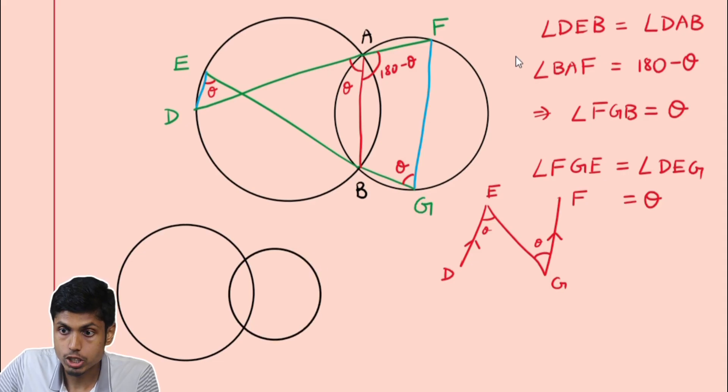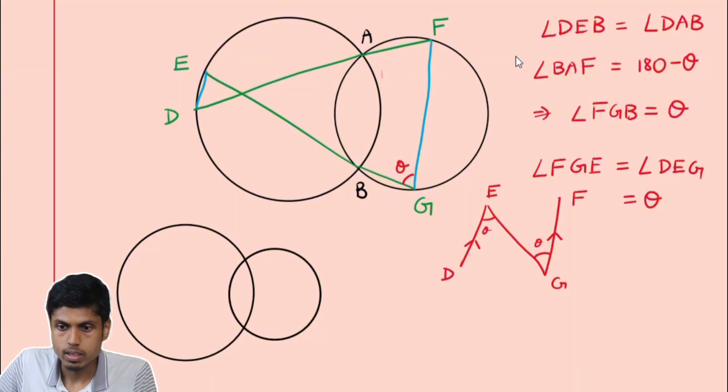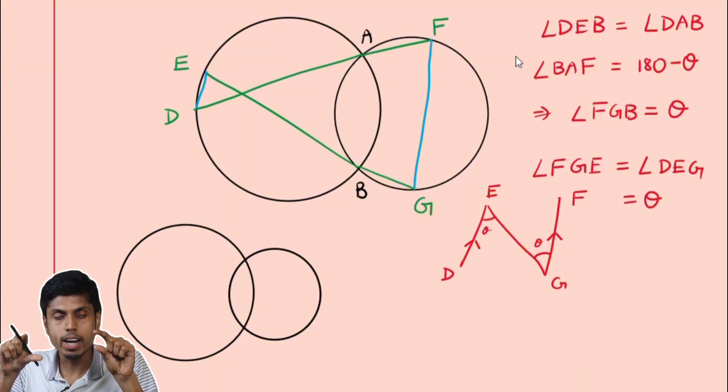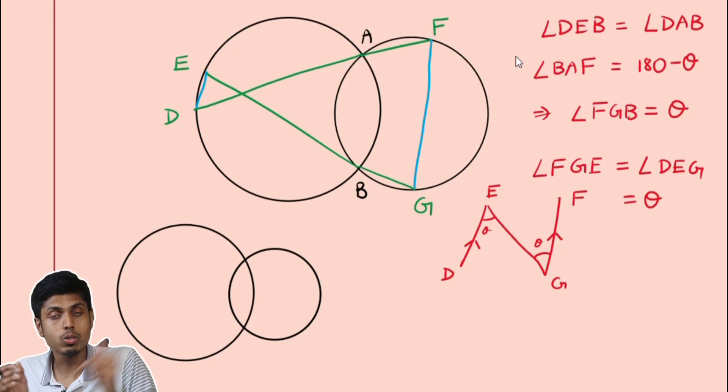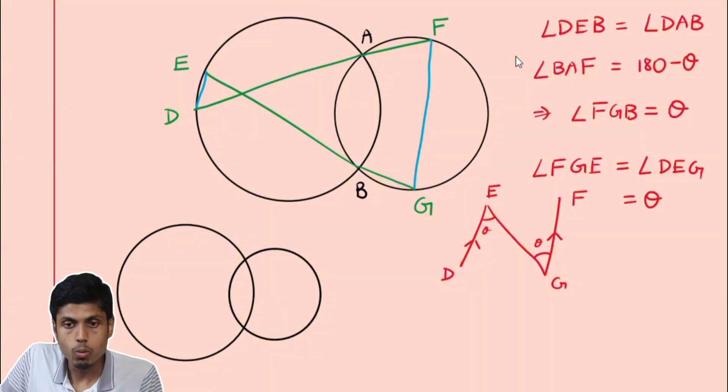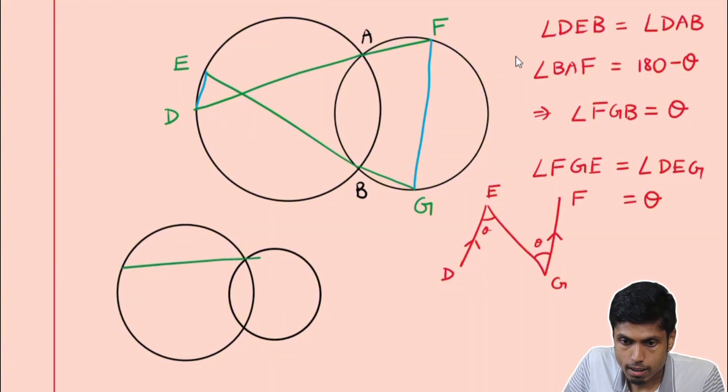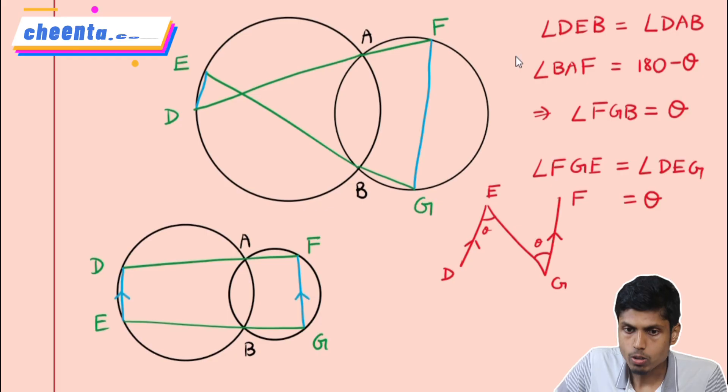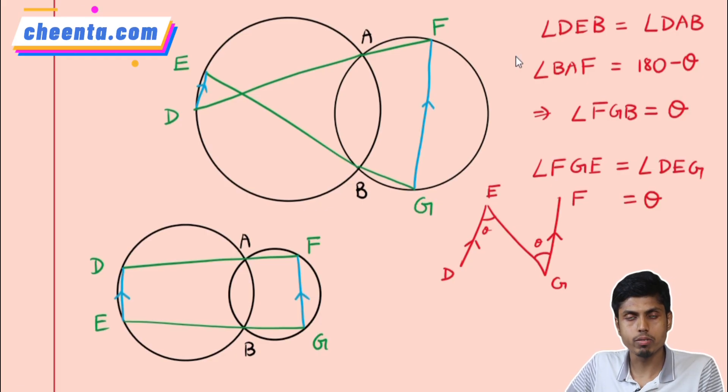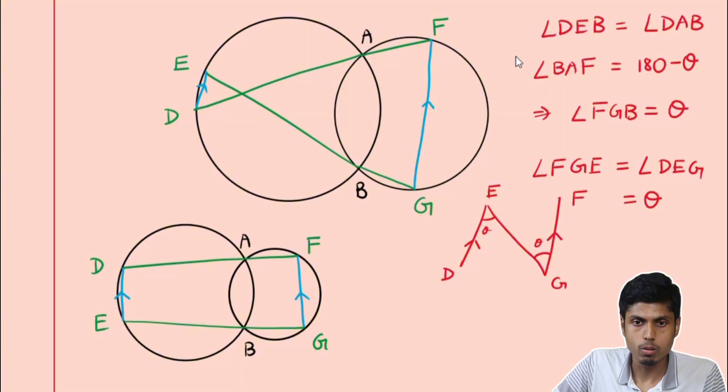So let's draw configuration 2. So this is one configuration in which you have the lines DE and FG formed by the endpoints that are intersection of lines through the intersection of the two underlying circles, whereas here you could have the same property like DAF being collinear and EBG being collinear. But still you have DE parallel to FG.